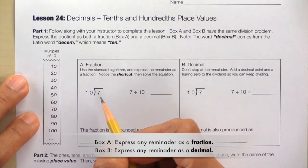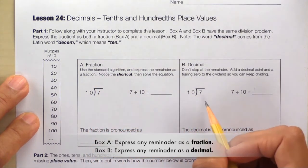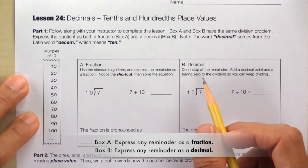In Box A we'll express any remainder as a fraction and in Box B we'll express any remainder as a decimal. Let's start with Box A.